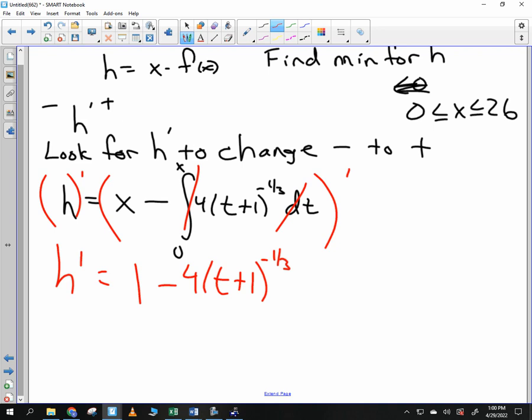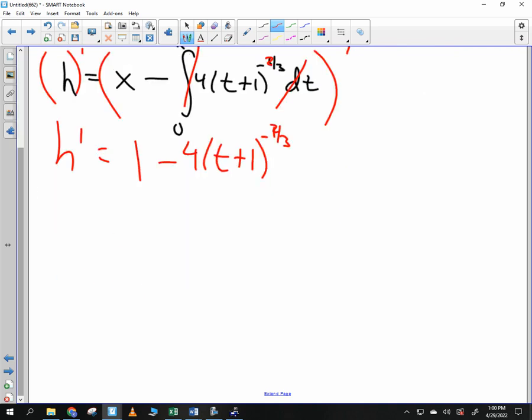I get 4 times t plus 1 to the negative 2 thirds power. So that's my equation. If I'm going to look for a change in sign, I'll set it equal to 0. So 0 equals 1 minus 4 over t plus 1 to the 2 thirds power. I'll move that to the other side.